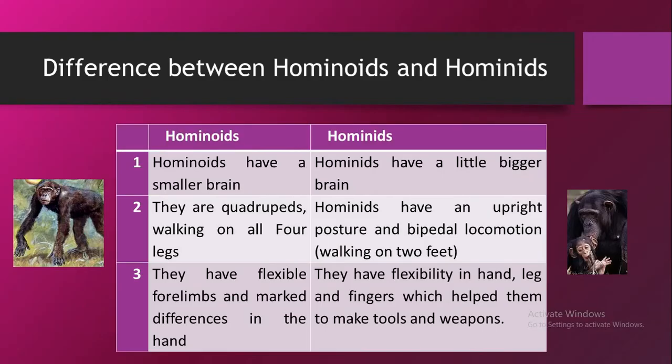Differences between hominoids and hominids: hominoids have a little bigger brain. Hominoids are quadrupeds, walking on all four legs, while hominids have an upright posture and bipedal locomotion — that is, walking on two feet. The hominoids have flexible forelimbs and marked differences in the hand, while hominids have flexibility in hand, leg and fingers, which help them to make tools and weapons.